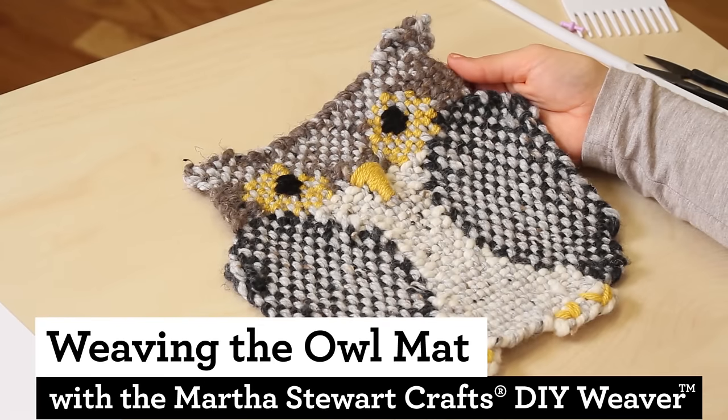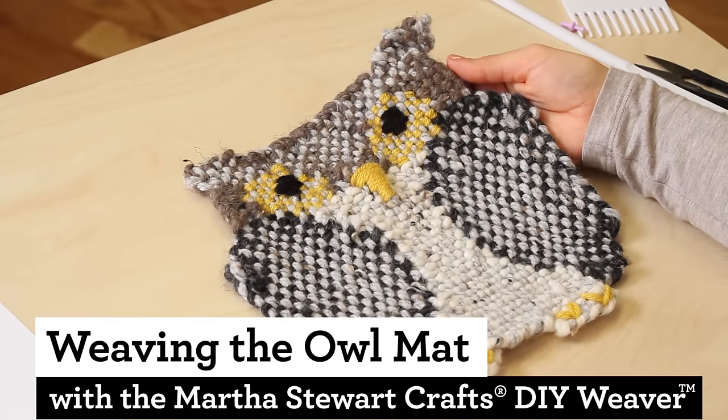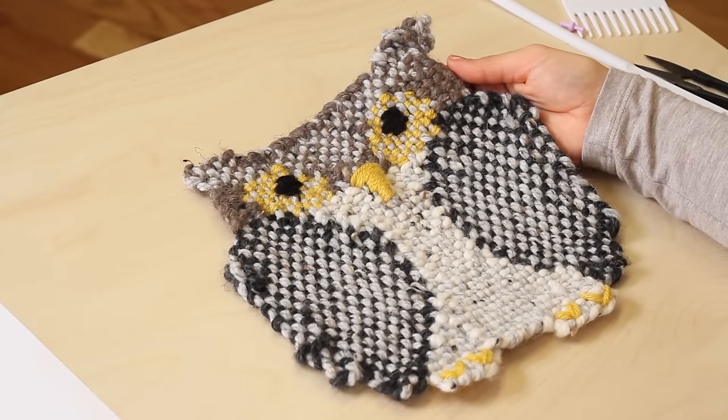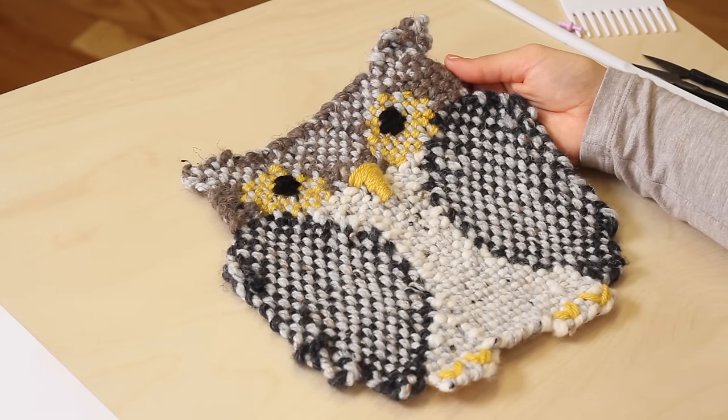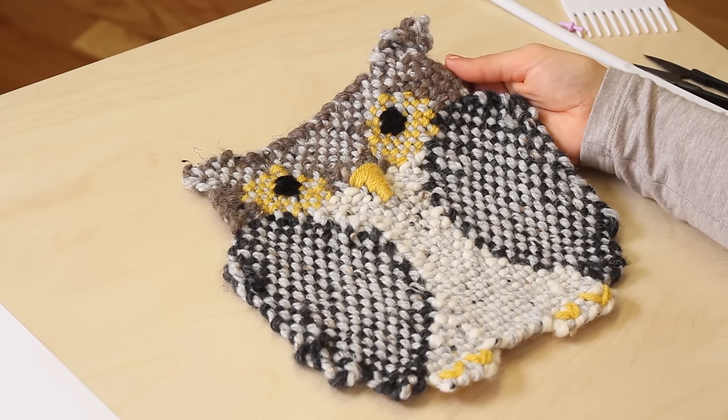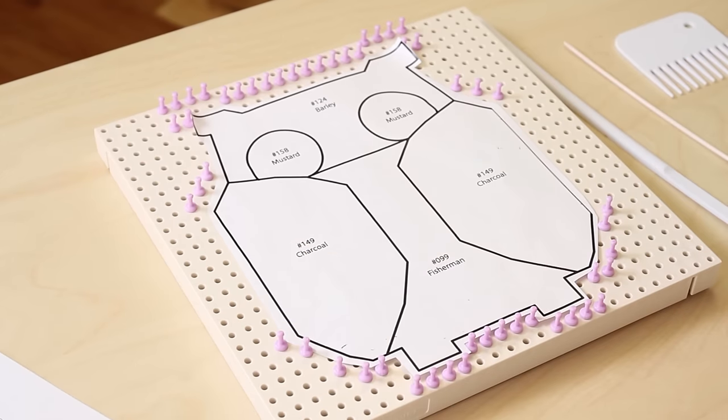The owl mat is made by weaving a shape with basic weaving and tapestry weaving. You should have some experience weaving with a DIY weaver before making the owl mat. On lionbrand.com there are diagrams available to help you along the way.